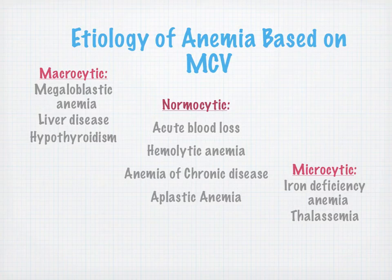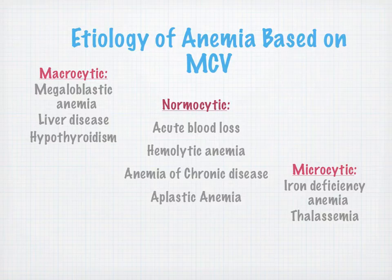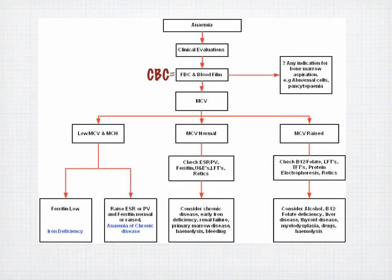Etiology of anemia based on MCV: macrocytic — megaloblastic anemia, liver disease, et cetera; normocytic — acute blood loss, hemolytic anemia, aplastic anemia; microcytic — typically iron deficiency anemia. There's also an algorithm slide of anemia classification using FBC (full blood count, same as CBC), which you can follow down to low MCV, normal MCV, and raised MCV to see what those might indicate.